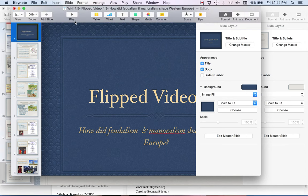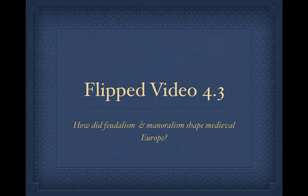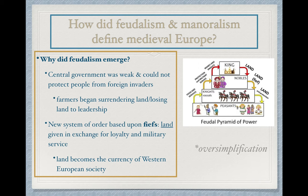We are back for Flip Video 4.3. We are going to be taking a look at the two systems that really defined the political, social, and economic systems of Europe during the medieval period — known as feudalism and manorialism. So let's get started with the essential question: how did feudalism and manorialism define medieval Europe?